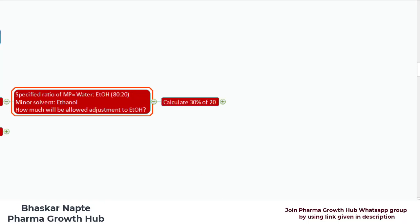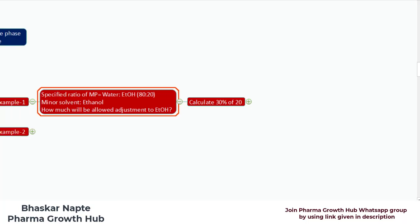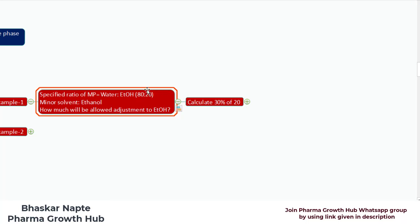Let us calculate it. According to USP General Chapter 621, plus or minus 30% relative volume can be changed. First, calculate 30% of the 20 parts of ethanol and it becomes 6, right? So it becomes 6%.